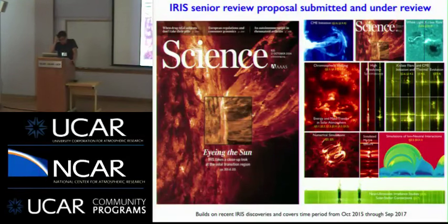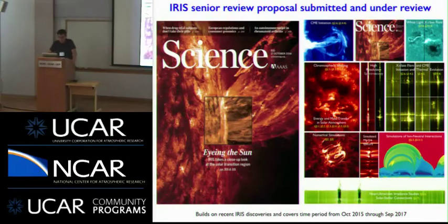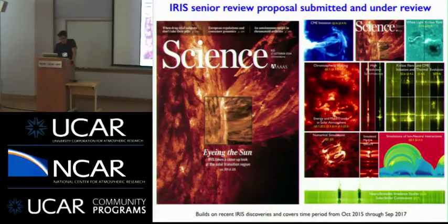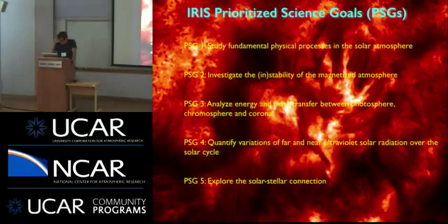We're currently undergoing the senior review process — a process that NASA is obligated to do every two years where all of the heliophysics missions have to write a proposal for continued operations. Our prime mission ends in July of this year, so we proposed to continue to operate IRIS. IRIS is in very good shape with no significant degradation. I wanted to give you an overview of what we're planning — it's built on recent discoveries, and these are our prioritized science goals in order of priority, as requested by NASA.